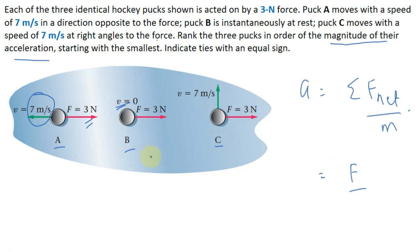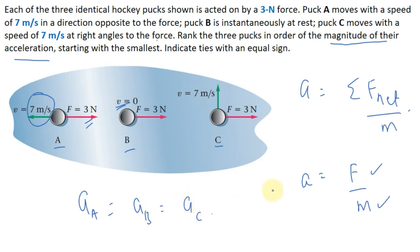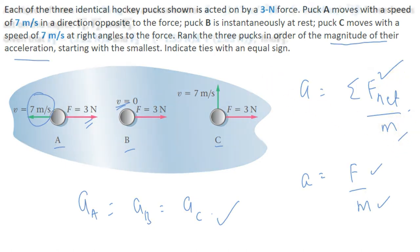The force acting on each puck is 3 Newton, which is the same in all three cases. Since the pucks are identical, their masses are also the same. Therefore, the acceleration for all three pucks is equal — it doesn't matter what direction the initial velocity is. Since net force and mass are identical, acceleration is the same for Pucks A, B, and C.